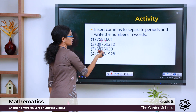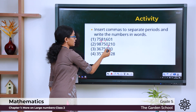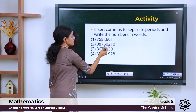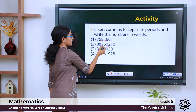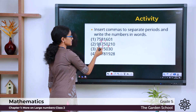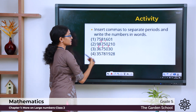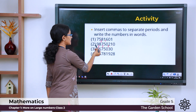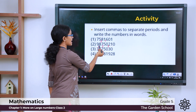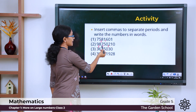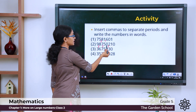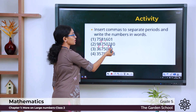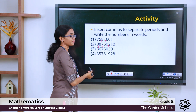For the next one: 1s, 10s, 100s — comma. 1000s, 10,000s — comma. Then the crore. So this one will be 9 crore, 87 lakh, 50,210.